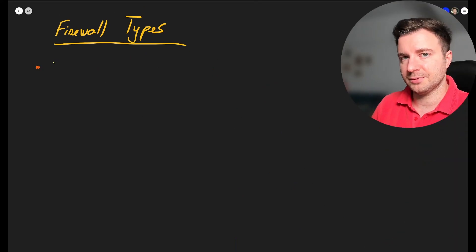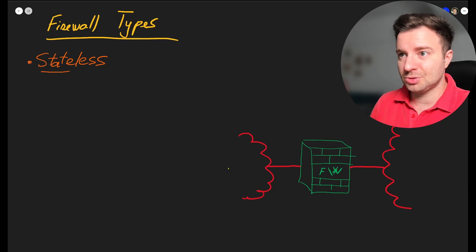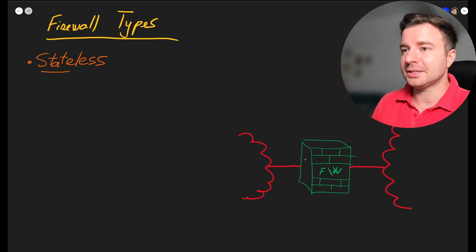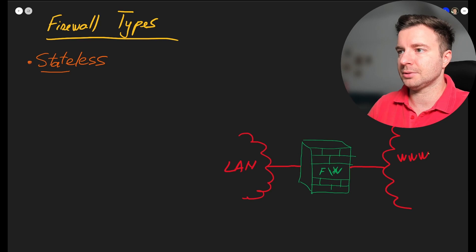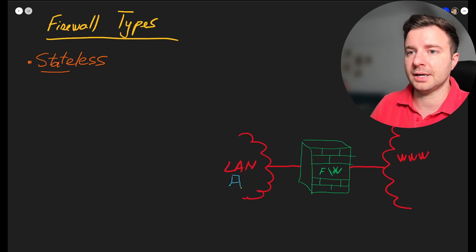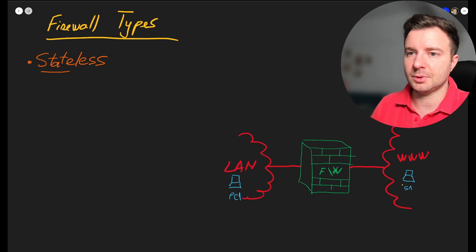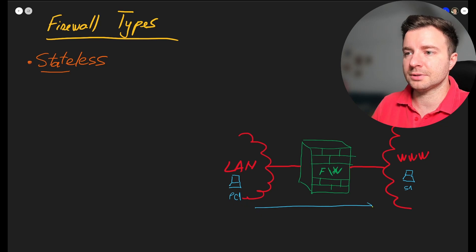The first and most basic firewall type is called stateless — it apparently has no state. To illustrate, imagine a firewall in the middle connecting two networks: a LAN on the left and the internet on the right, with two hosts — PC1 on the LAN side and a public server S1 on the internet side. These two entities communicate through the firewall: PC1 sends a request and S1 responds with a reply.